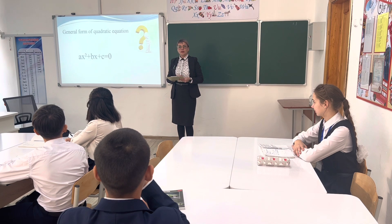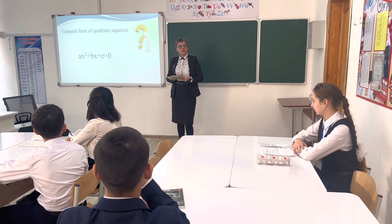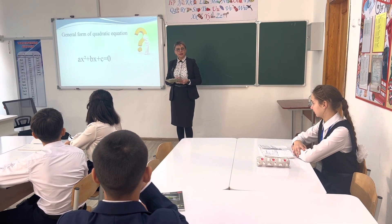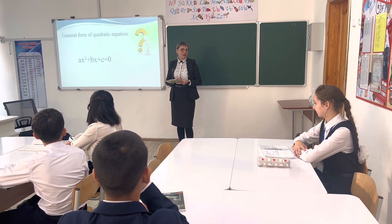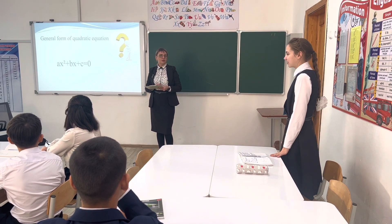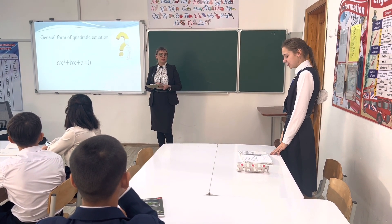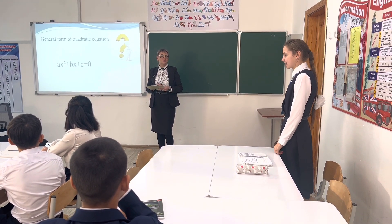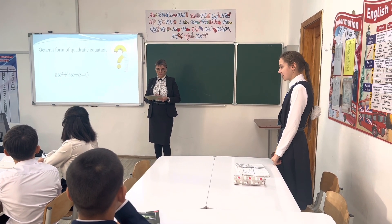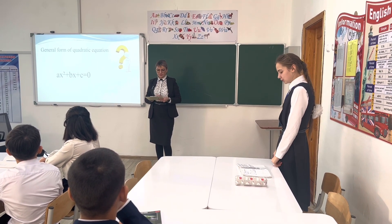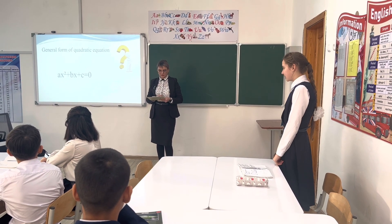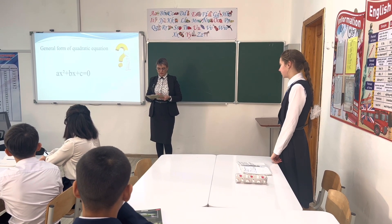The first question is: what is the general form of a quadratic equation? Alina, can you tell us? The general form of a quadratic equation is Ax² plus Bx plus C equals zero, where A, B, and C are real numbers.